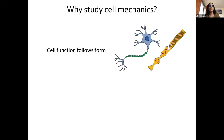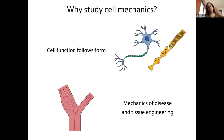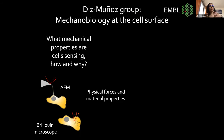One might wonder: why do you actually study cell mechanics? The most obvious basic research answer is because cell function follows form. If you want to act as a neuron, you need to look like a neuron, and for that you need a cytoskeleton and certain mechanical properties that allow you to take that shape. We have also come to realize that for many pathological processes, prognosis and development depends on mechanics — for example, how endothelial cells respond to shear flow. Wherever there are bifurcations in vasculature or bending, this leads to unsteady flow, and it's exactly there that you find the onset of arteriosclerosis.